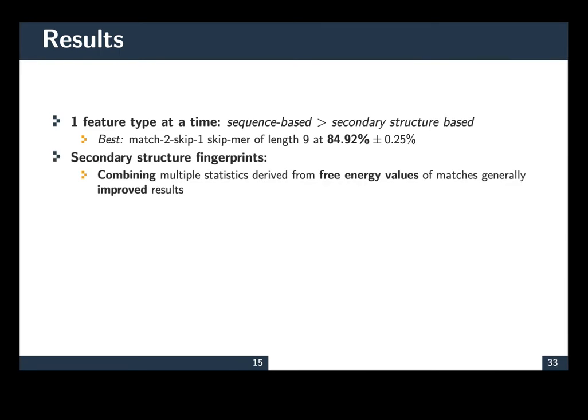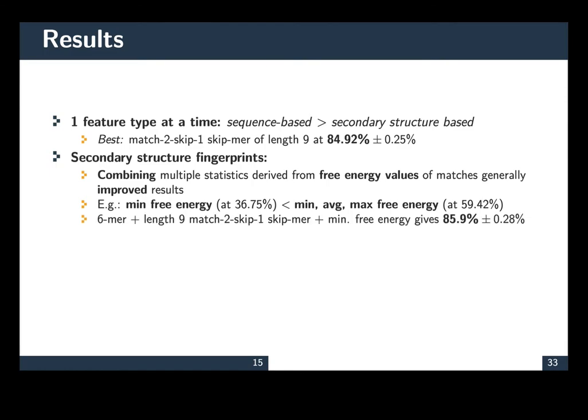For the secondary structure fingerprints, we find that combining statistics derived from free energy generally outperforms using minimum free energy alone. And we find that combining 6-mer as well as the Match 2, Skip 1 Skip-mer of length 9 with minimum free energy was the best combination when using secondary structure information. And the accuracy was 85.9%. However, overall,